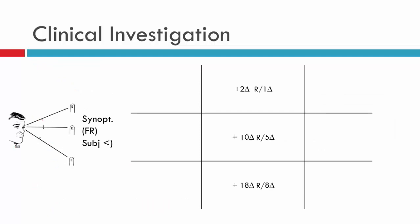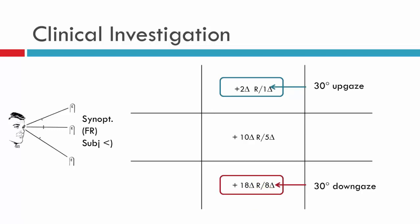Here we have a patient assessed on the synoptophore. The subjective angle in primary position is 10 diopters with a right on left of 5. In up gaze we have 2 diopters with a right on left of 1, and in down gaze 18 diopters with a right on left of 8. Comparing up and down gaze performed at 30 degrees, we see a significant change in horizontal deviation — a 16 prism diopter difference — which just meets the criteria for a pathological V pattern. This is a V-eso: the esotropia is decreasing in up gaze and increasing in down gaze.